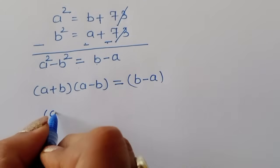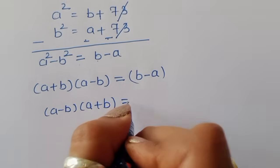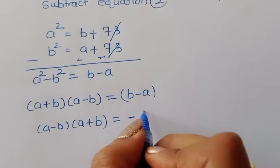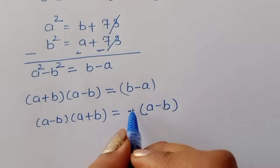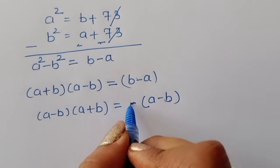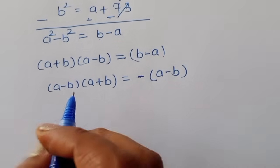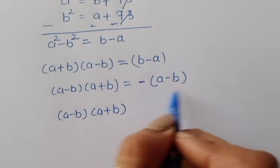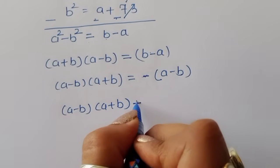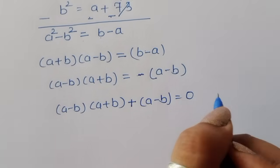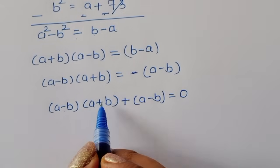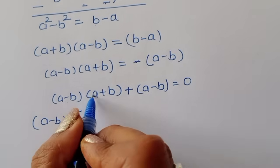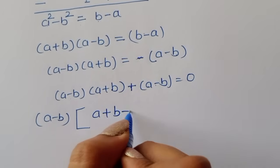Now (a + b)(a - b) = b - a. Taking minus sign common on the right side: b - a = -(a - b). Moving the right side term to the left gives us (a + b)(a - b) + (a - b) = 0. Taking (a - b) common, we get (a - b)(a + b + 1) = 0.